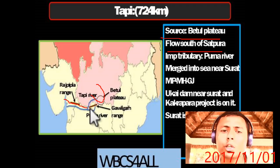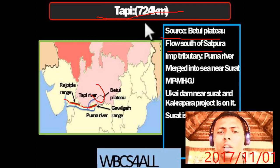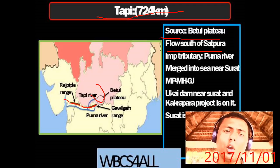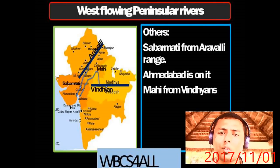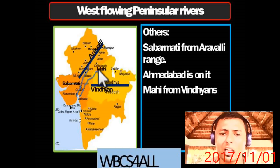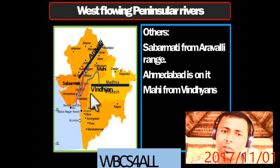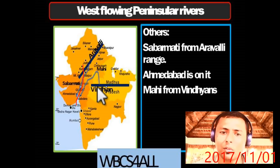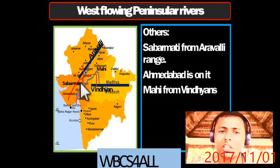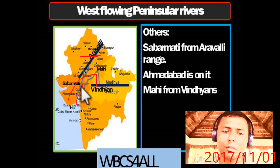Only Narmada and Tapi flow westward because they are in rift valleys. The length of Tapi is 724 km. Other west-flowing rivers include Sabarmati, originating from the Aravalli range, and Mahi, originating from the Vindhyachal. These are also west-flowing rivers.